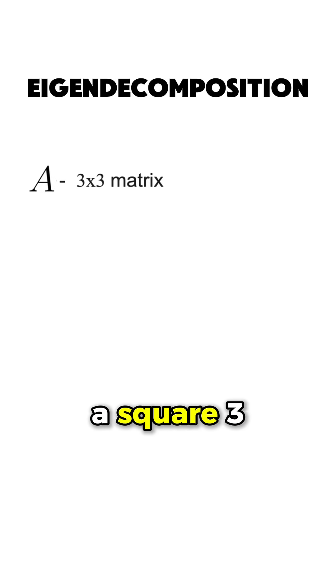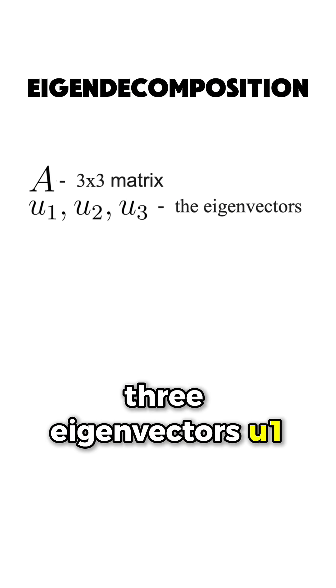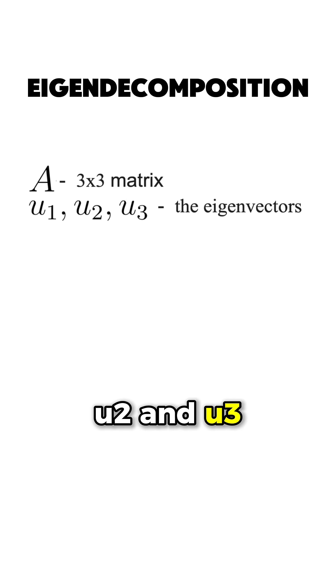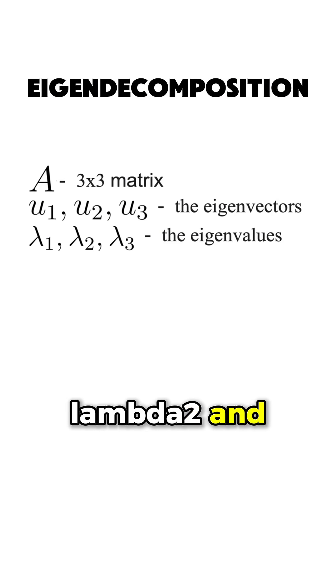Let's assume that we have a square 3 by 3 matrix A, and its corresponding 3 eigenvectors U1, U2, and U3, with the corresponding eigenvalues lambda 1, lambda 2, and lambda 3.